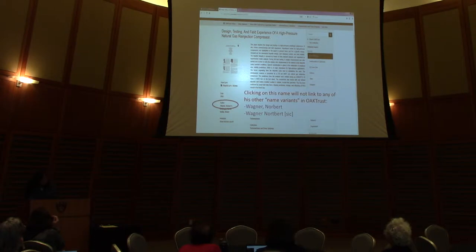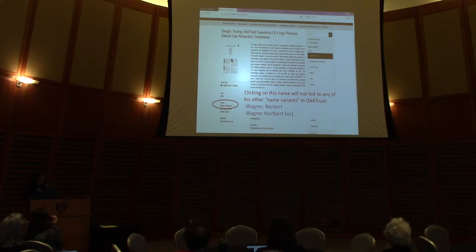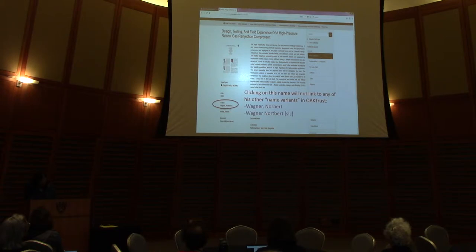Most users will never see that page, because users tend to rely on keyword searching to pull up digital items. Ideally they should be able to, when they land on a work, click on the name access point circled on the screen and get all that person's works in our IR. However, that's not going to be the case if the name is not entered consistently — like without the initial, or if it's even misspelled.